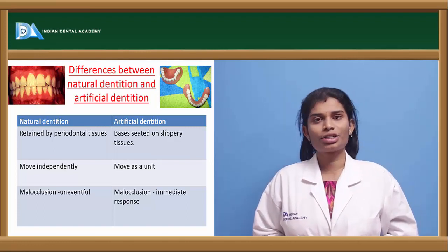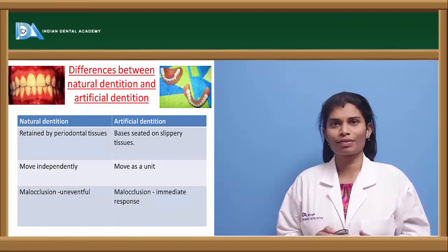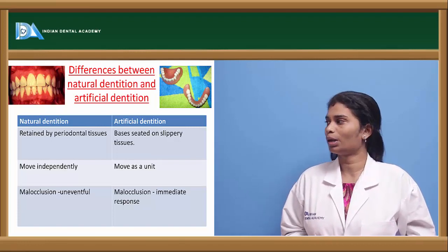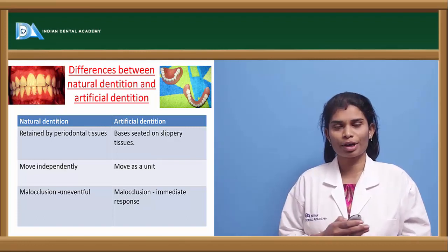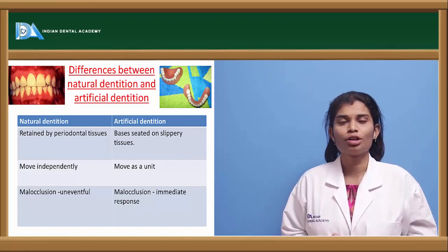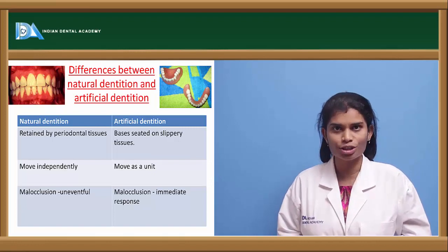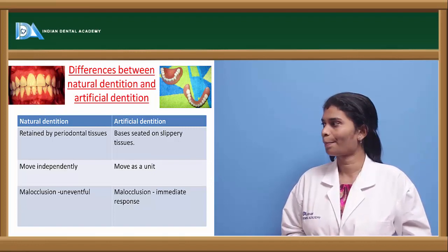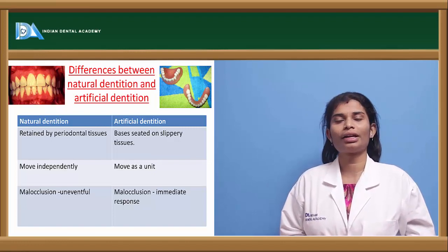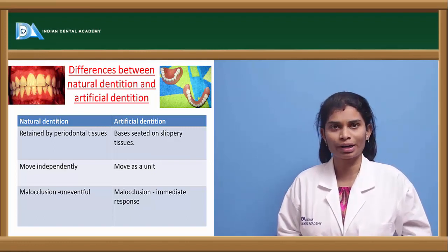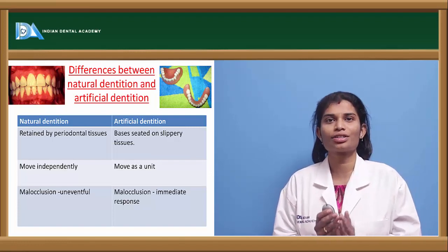Natural dentition is retained by the periodontal tissue — the support mechanism is given by periodontal tissues. But in artificial dentition, all these periodontal tissues are missing. So the denture gets its support from the slippery denture bearing area. Natural teeth, when acting under forces, act independently — each tooth acts independently as a unit, as a different system.